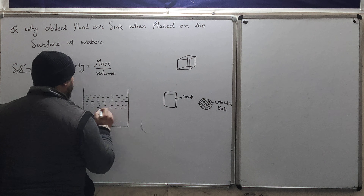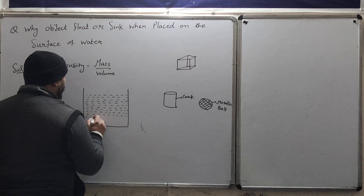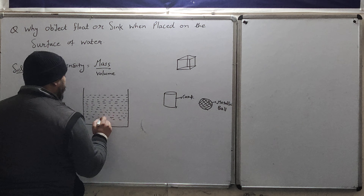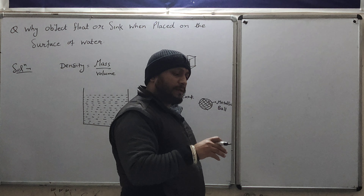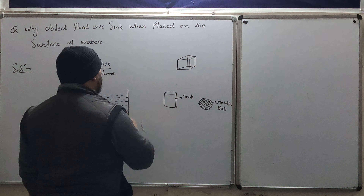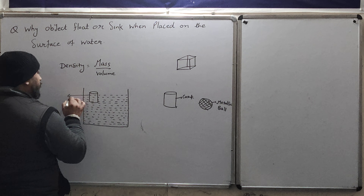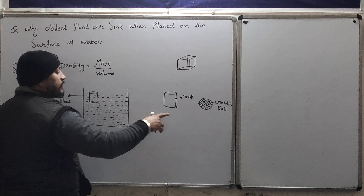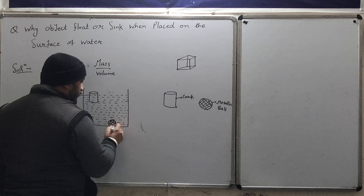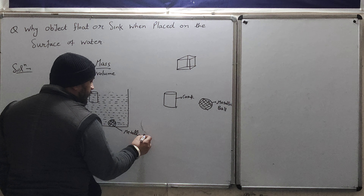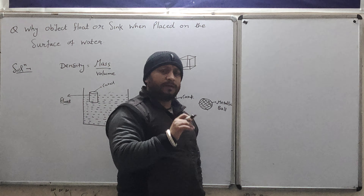For example, I am taking two objects here. This is the first object, which I am calling cork. And this is the second object, which I am calling a metallic bowl. And this is the beaker which has water in it. Now what we will do is place both these objects one by one inside this beaker which already has water. You will see that one object will float on the water's surface, and one object will sink inside the water.